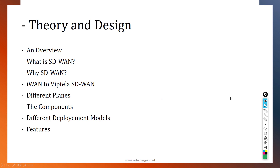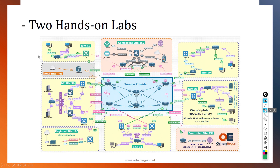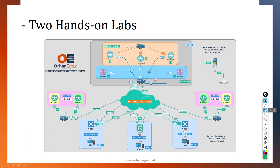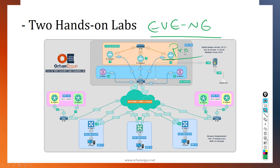We have two labs. The first one, which is the main lab as you can see from the picture, is the topology that will be used for most of our configurations. The second lab covers controller redundancy and high availability. We could merge these two labs, but the resource requirements to virtualize all the nodes would be very high. You will get both community and professional versions of the labs for Eve-NG.